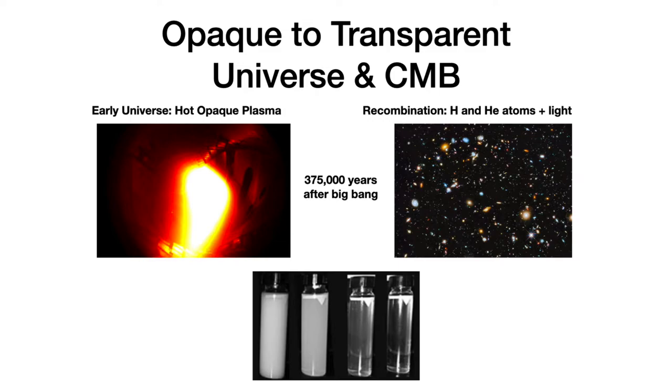Before recombination, light and matter were strongly coupled and were at the same temperature. At the epoch of recombination, light and matter were both at the temperature of about 3000 degrees, which translates to basically visible light. Following recombination, light and matter decoupled. As the universe expanded about a thousandfold, the visible light at the age of recombination turned into microwave light in the present universe.